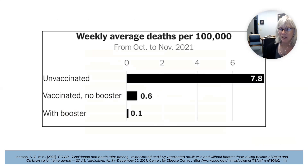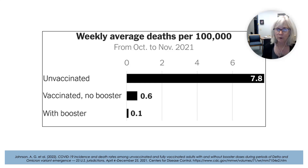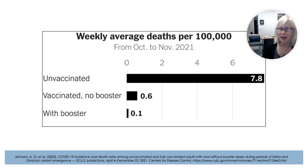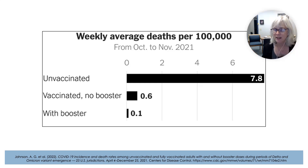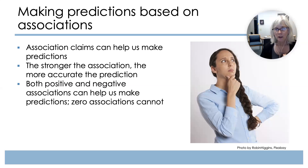Another way that we can talk about correlations is using bar graphs. Here we're looking at the average deaths per 100,000 for unvaccinated, vaccinated, and boosted people during a particular period. We see the relationship that there are more deaths per 100,000 for unvaccinated people than for people who are either vaccinated or boosted.